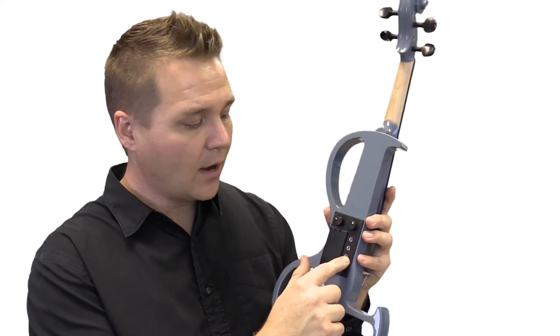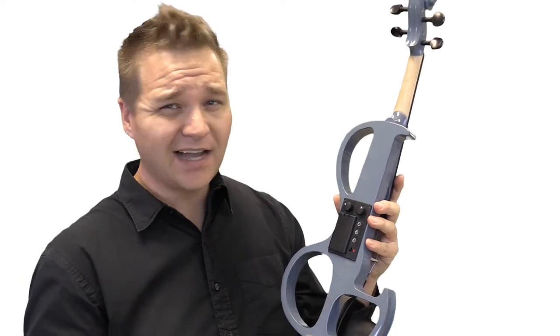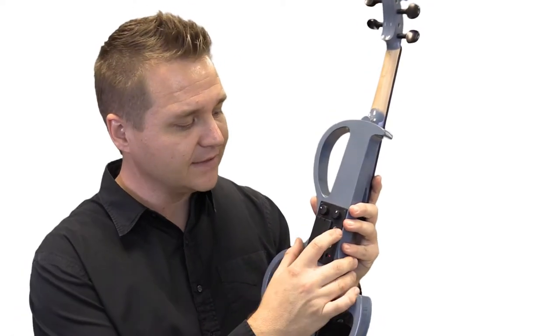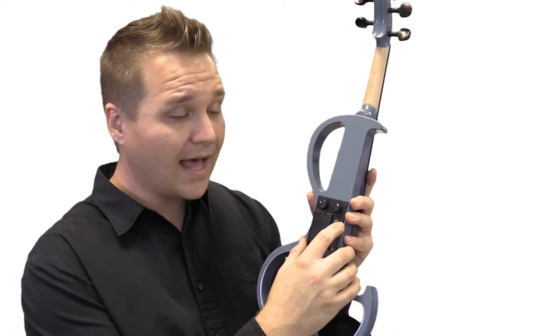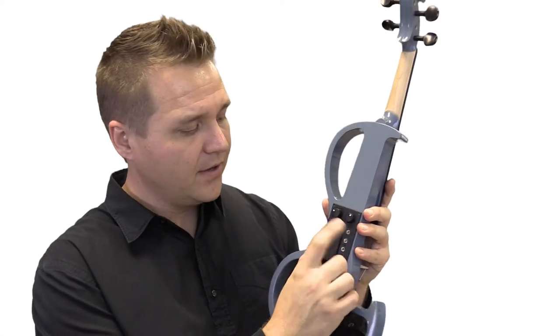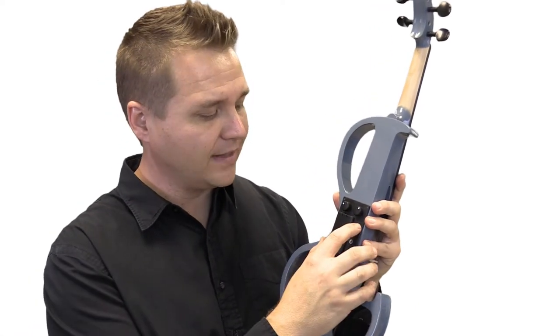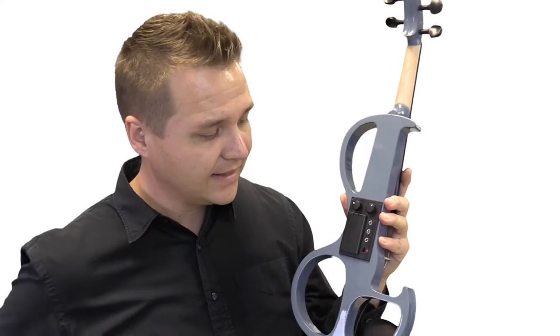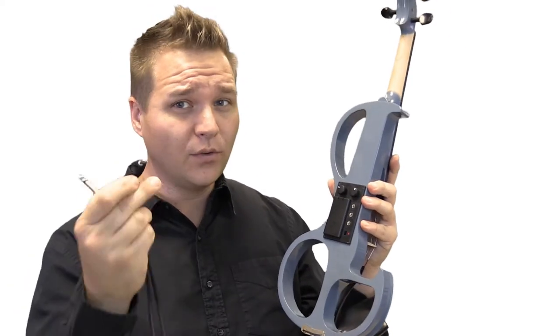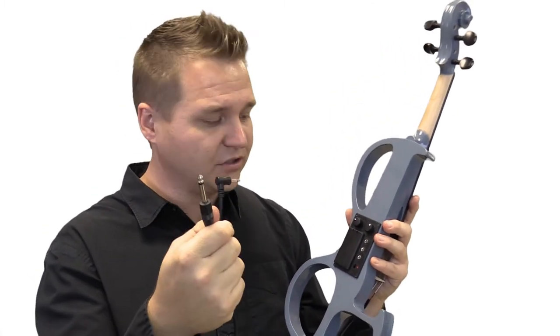Here are the outputs and to not get too technical there is a difference between the line level and mic level. For most purposes to go into an amplifier you're gonna want to put it in the line out and this is another difference, you'll always need the cable that comes included with the violin which is an eighth inch jack to a quarter inch jack.